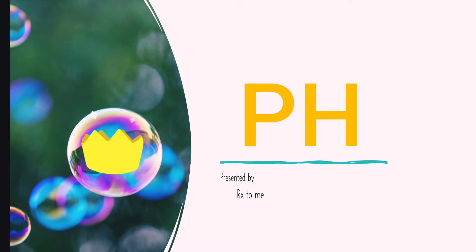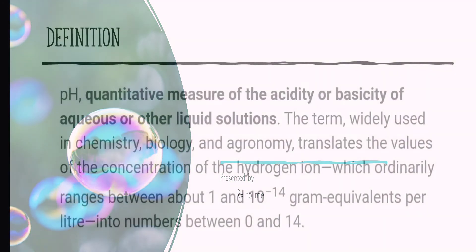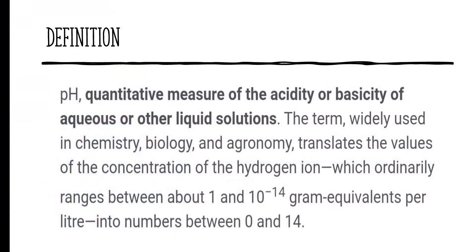Click the bell icon and subscribe button. pH means quantitative measurements of acidity or basicity of aqueous or other liquid solutions. To measure acidity and basicity in aqueous solutions, widely used in chemistry, biology, agronomy. It translates concentration, mainly concentration of hydrogen. You have to measure acidity and basicity.